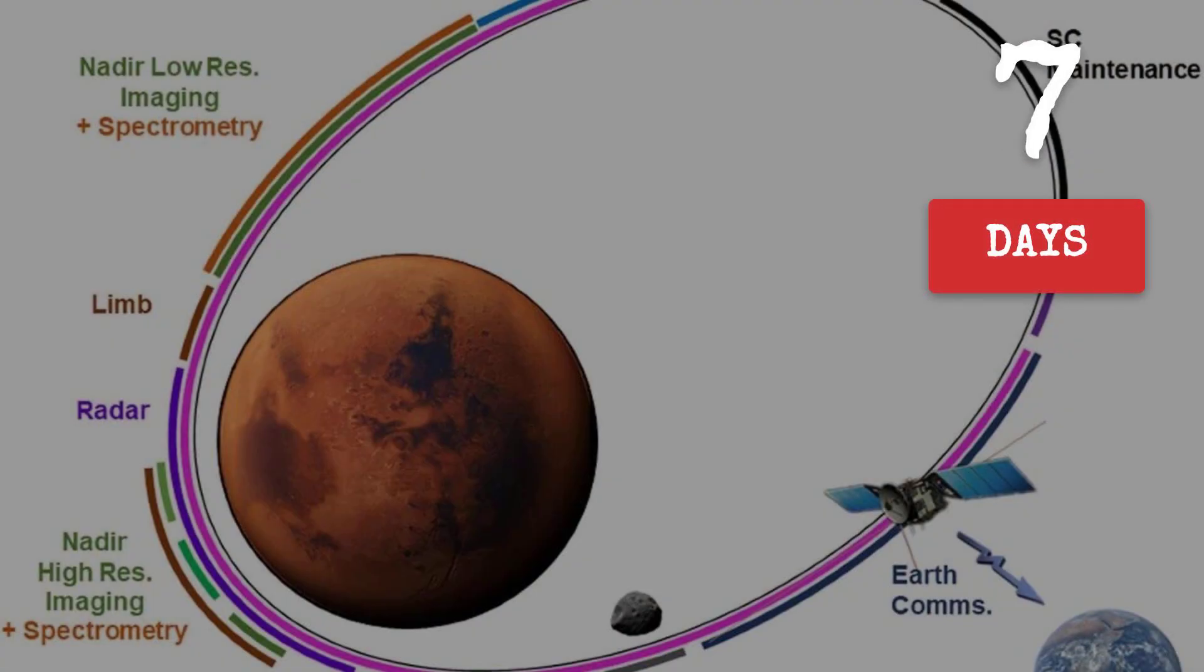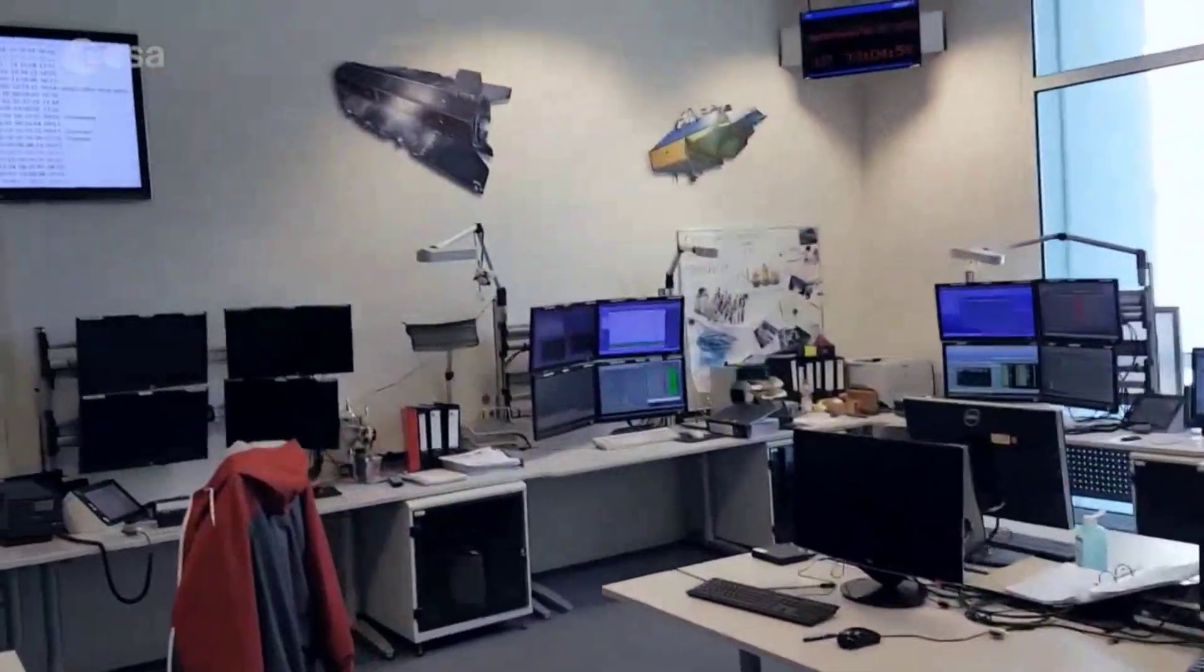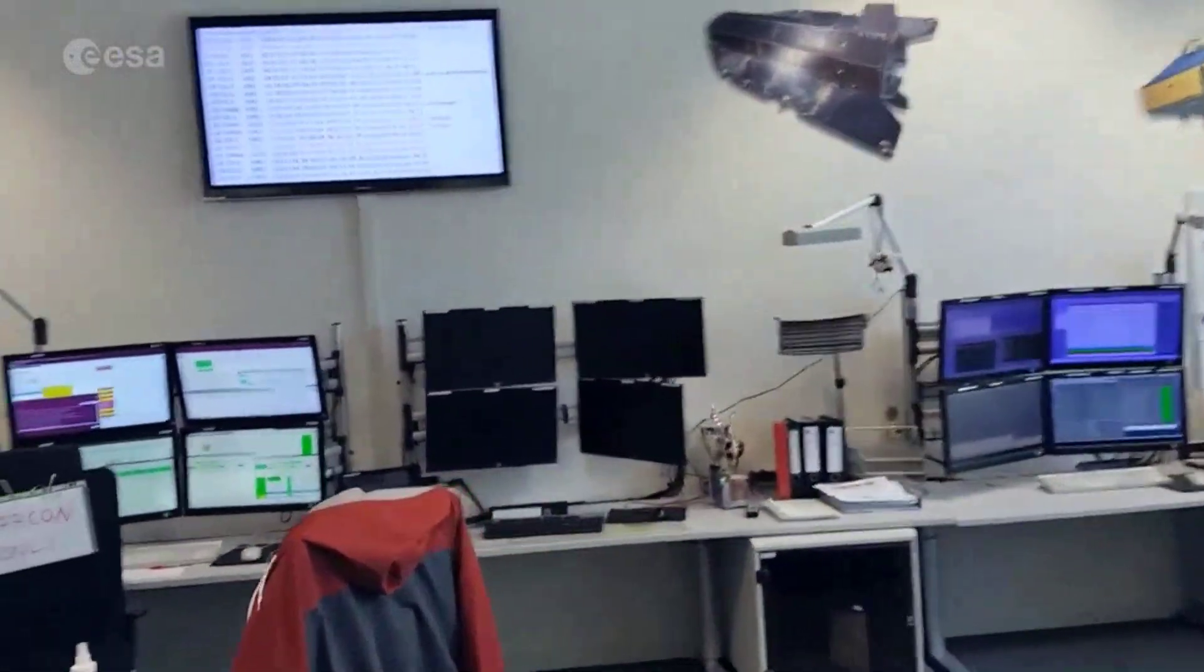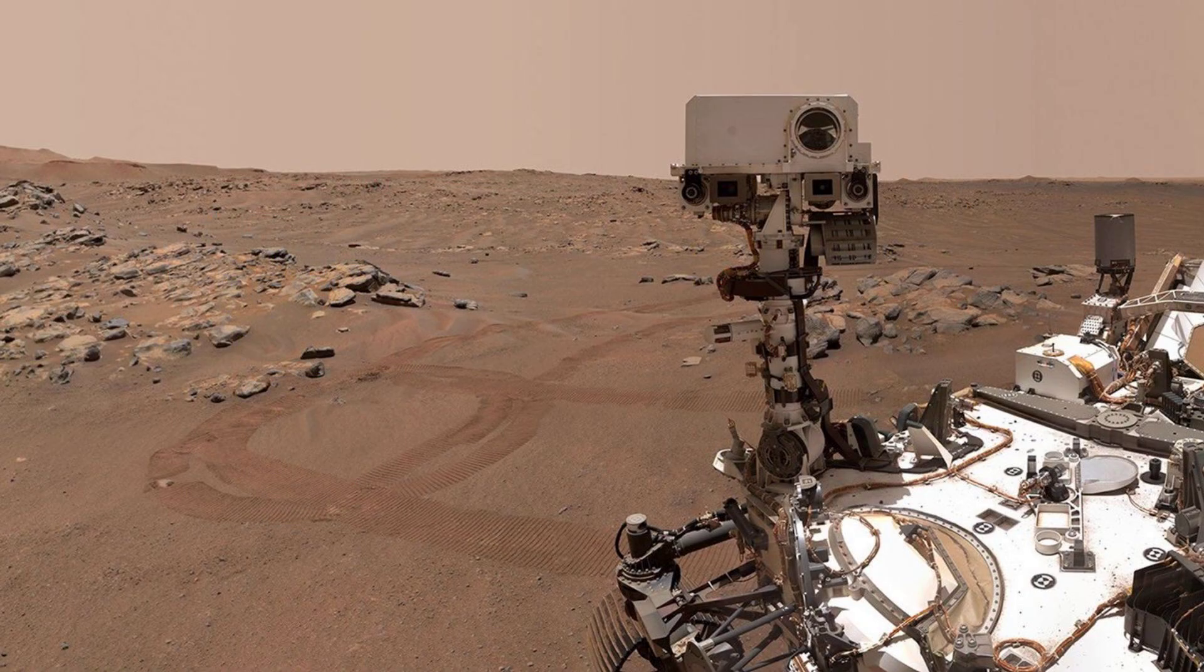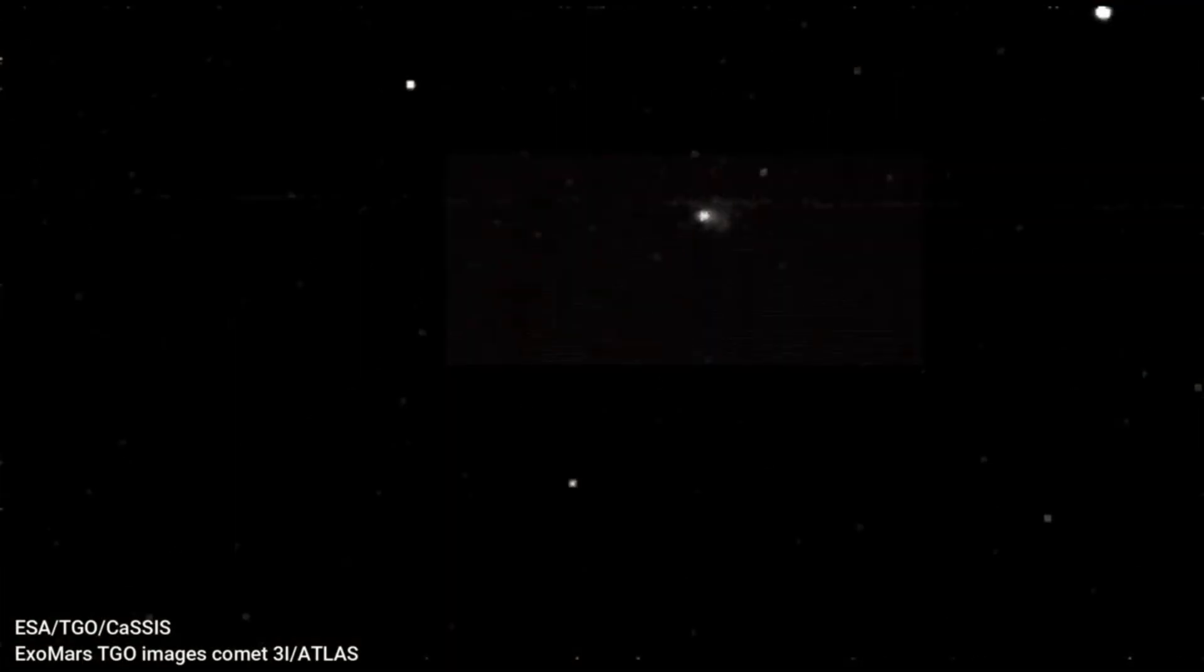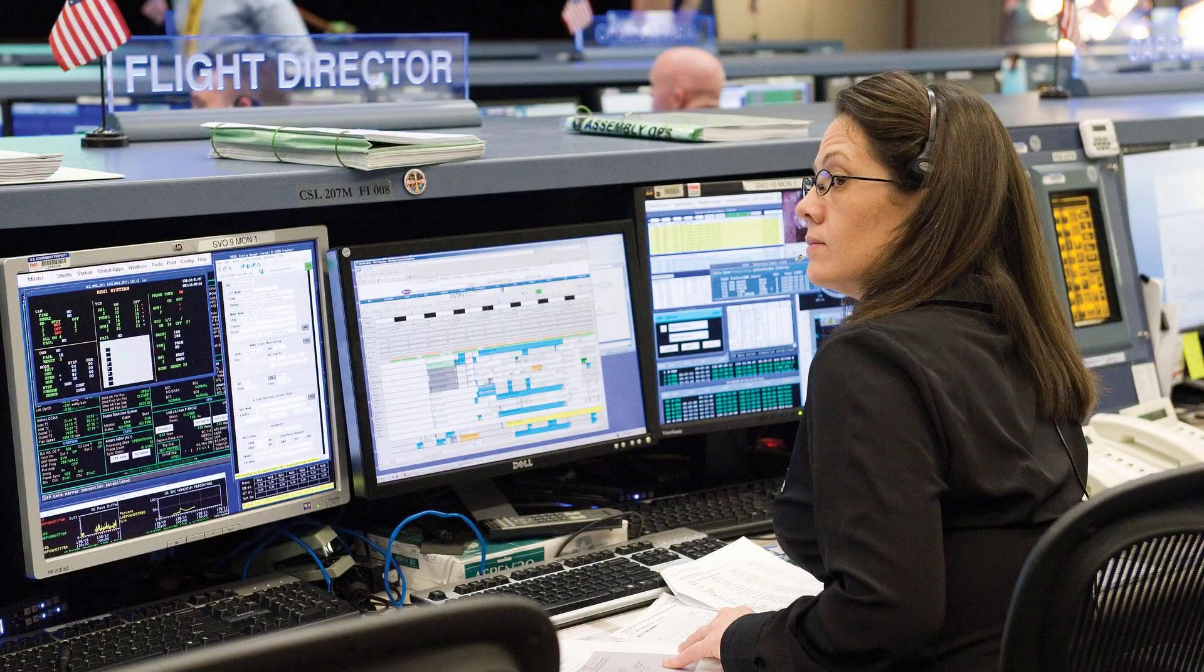This narrow window, just seven days, became a test of operational agility. Every observation had to be meticulously planned, with spacecraft attitude, instrument cooling, and data bandwidth all factored against the demands of routine Mars science. For a brief moment, the Red Planet's orbiters became the most important comet chasers in the Solar System, tasked with capturing evidence of a traveler from beyond the Sun's domain. The results would depend not just on hardware, but on the split-second timing and technical improvisation of teams working around the clock.